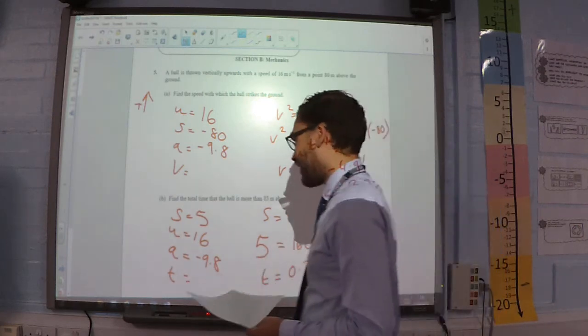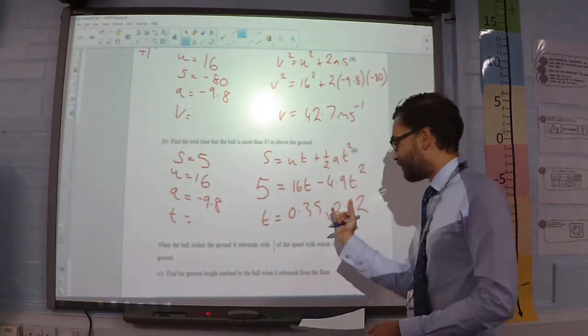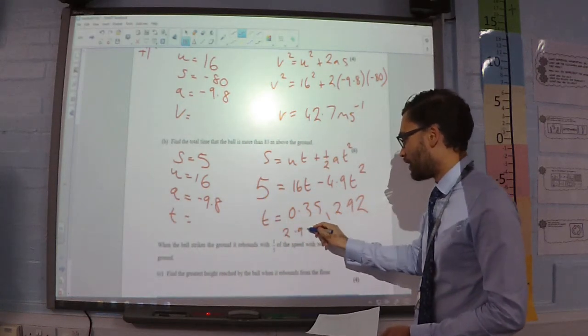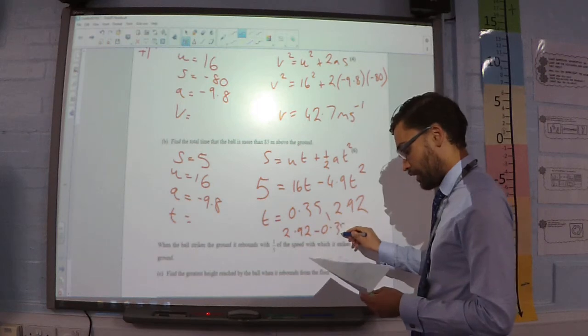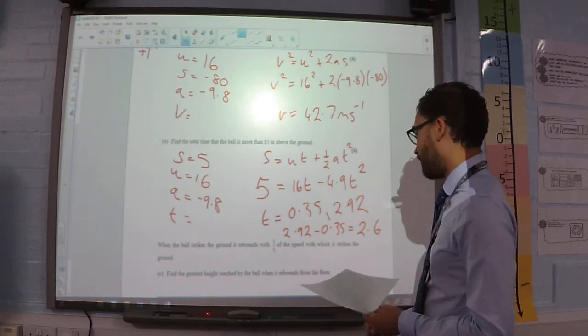So, the time at which it is above 85 meters is the difference between these. So, 2.92 take away 0.35 to get 2.6 to two significant figures.